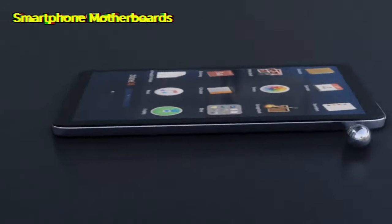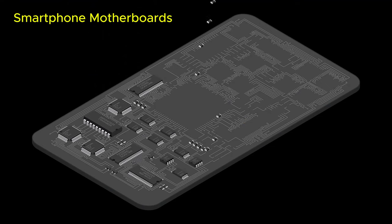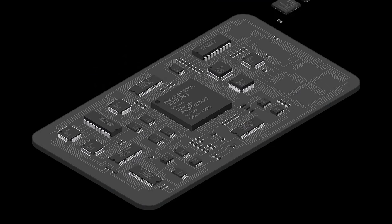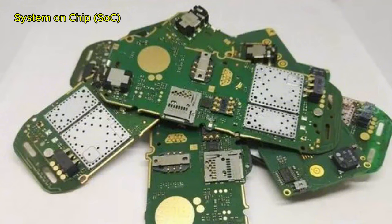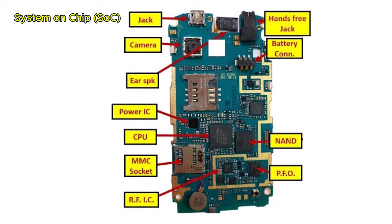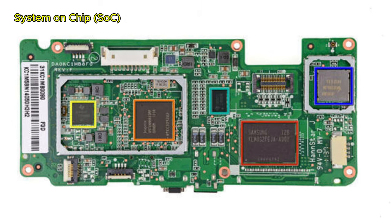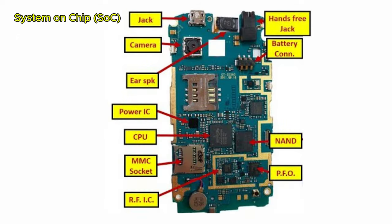Now let's discuss mobile phone motherboards. Mobile phones use a specialized type of motherboard called a System-on-Chip, or SOC. Unlike traditional PC motherboards which house separate components like the CPU, GPU, RAM, and storage, an SOC integrates all of these essential components into a single chip to save space and improve efficiency. This allows mobile devices to be more compact and power-efficient while still delivering high performance. The SOC in a mobile phone typically includes a CPU (central processing unit) — the brain of the device that handles general processing tasks.